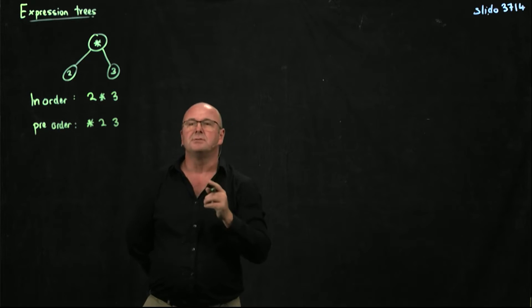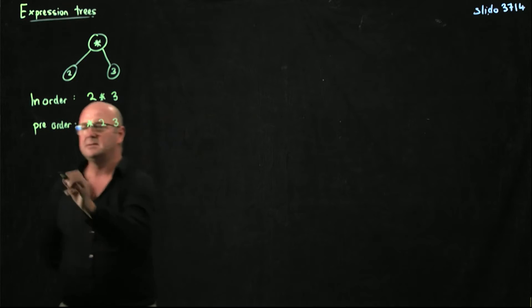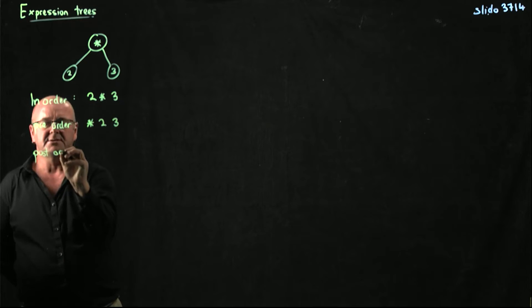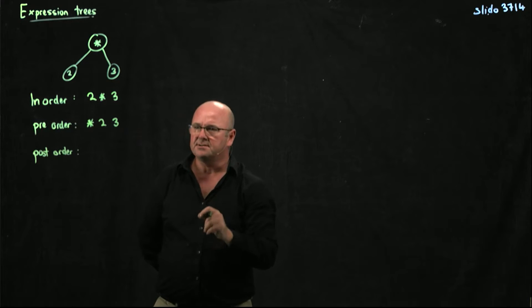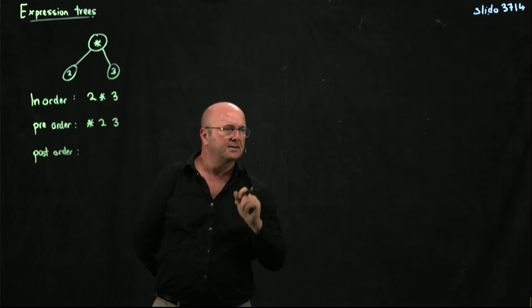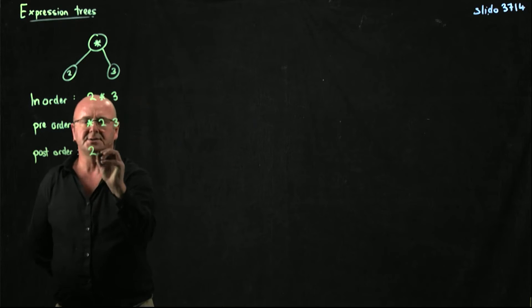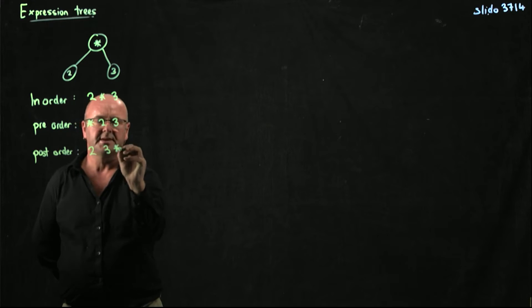And then I can do a post-order traversal. In a post-order traversal, I visit the left child, the right child, and the root. So I would get two, three times.